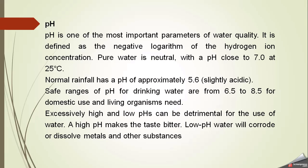One of the most important water quality parameters is pH, defined as the negative logarithm of hydrogen ion concentration. Pure water is neutral with a pH close to 7 at 25°C. Normal rainfall has a pH of approximately 5.6, which is slightly acidic. The safe range for drinking water is 6.5 to 8.5. Excessively high or low pH is detrimental for humans and distribution systems — high pH makes water taste bitter, while low pH causes corrosion and dissolves metals.